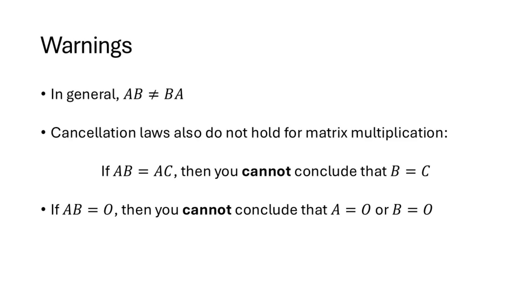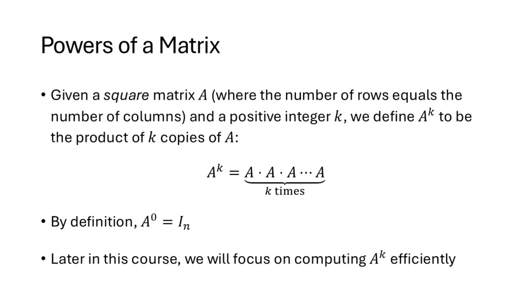When we have a square matrix A — say n by n — we can multiply A by itself. We can do this multiple times; we call this taking the power of a matrix: A to the k is just A multiplied by itself k times. By definition, A to the zero power is the n by n identity matrix. Multiplying matrices by themselves and raising them to high powers is something we'll talk about more later in the course.